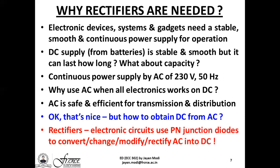The answer lies in using rectifiers — electronic circuits that use PN junction diodes to convert, change, modify, or rectify AC into DC. Since the name comes from 'rectify,' we get the word rectifiers. Basically, rectifiers are circuits or devices that use PN junction diodes to simply convert AC into DC.